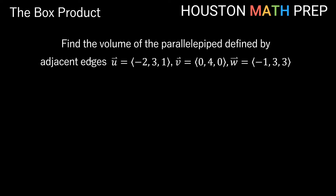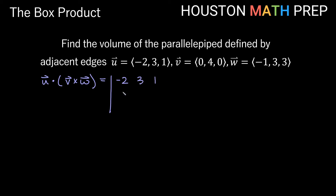Let's work an example. We want to find the volume of the parallelepiped defined by adjacent edges, given the three vectors: u = (-2, 3, 1), v = (0, 4, 0), and w = (-1, 3, 3). The idea is to find u dot v cross w, and we'll use our three by three determinant shortcut.